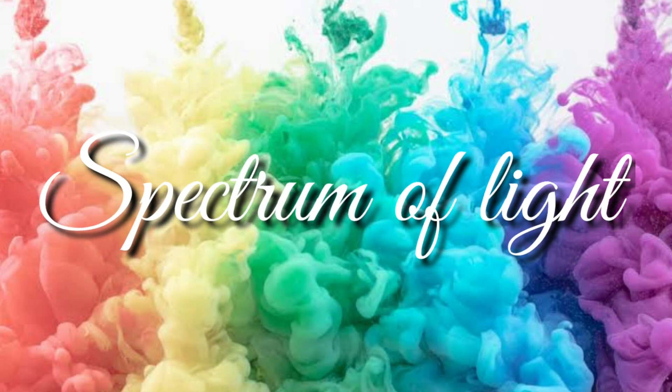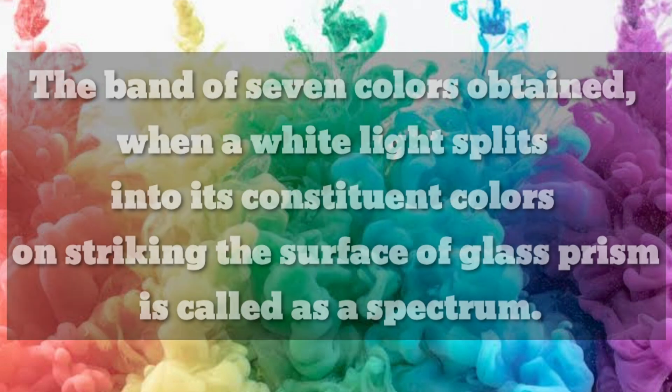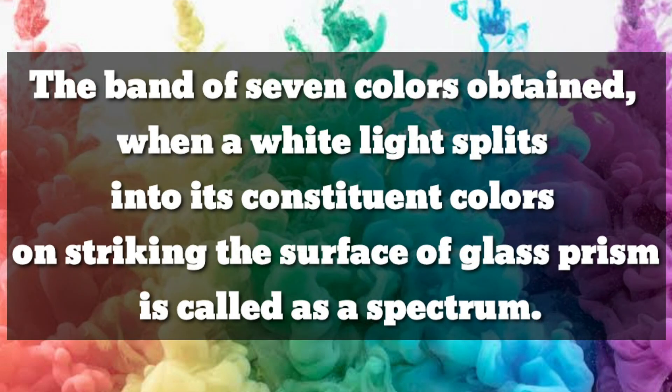So at first we should know what is Spectrum of Light. The band of seven colors obtained when a white light splits into its constituent colors on striking the surface of a glass prism is called as a spectrum.